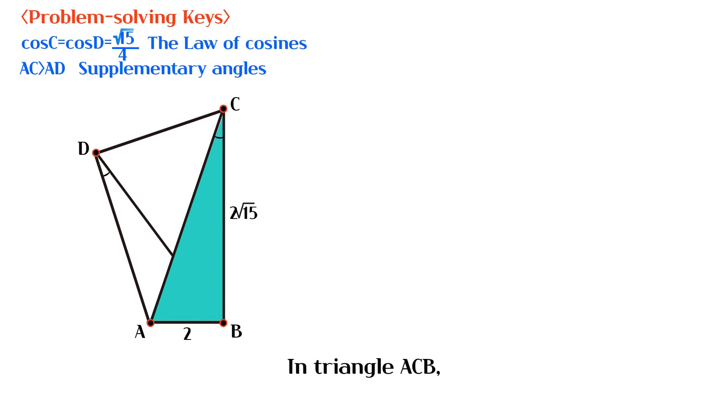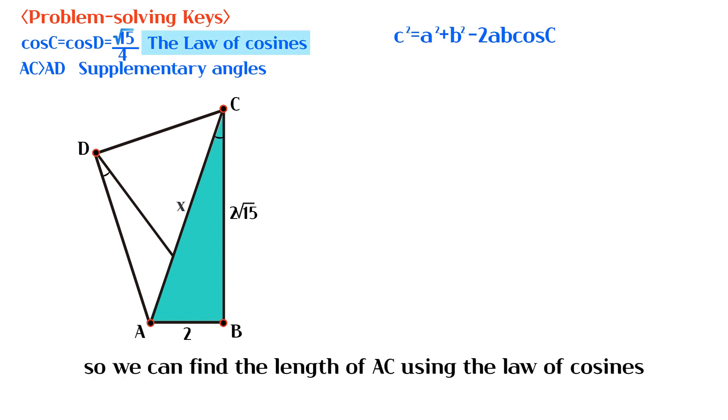In triangle ACB, we are given the lengths of AB and BC, and the value of cosine C. So we can find the length of AC using the law of cosines.